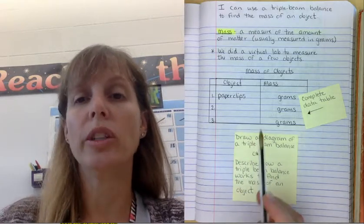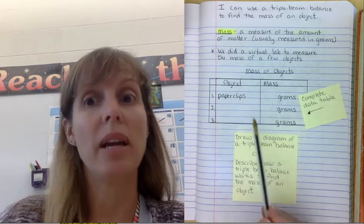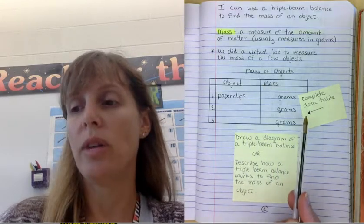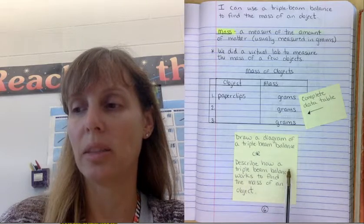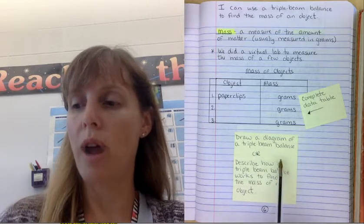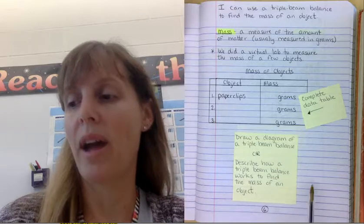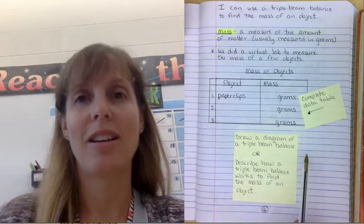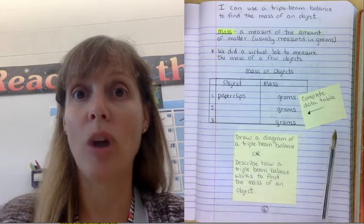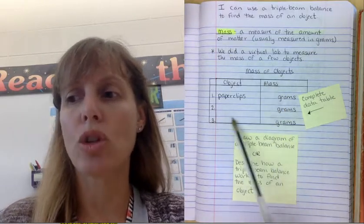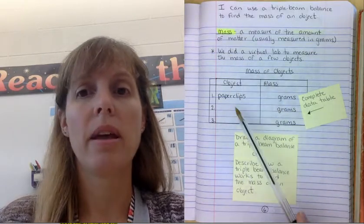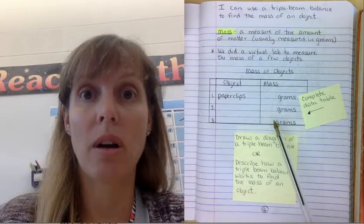So when you're done, it will only take five minutes. When you're done, you need to make sure that you either draw a diagram of a triple beam balance in this space, or you describe how a triple beam balance works to find the mass of an object. So that's it for page six of your notebook. Make sure you put in your table before you start on your video for your virtual lab.